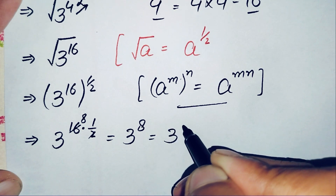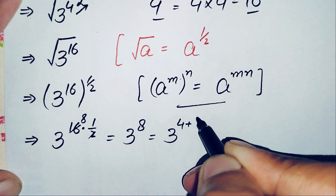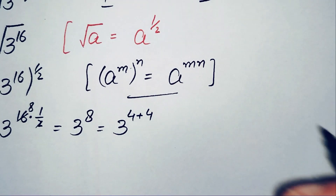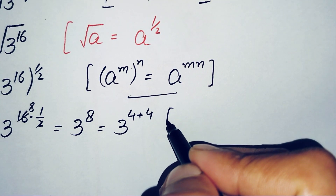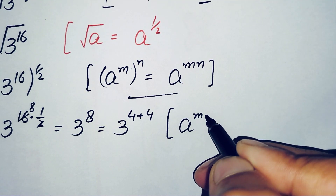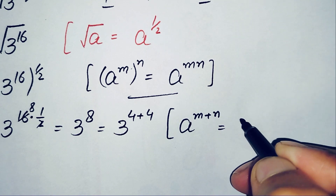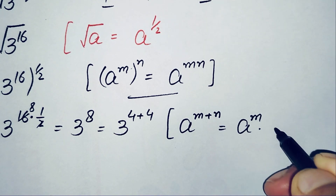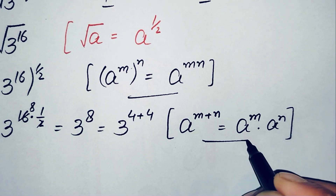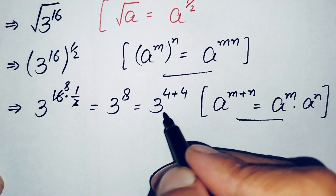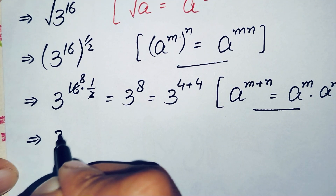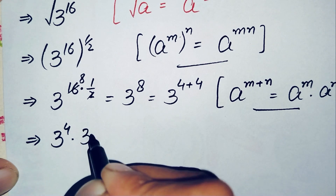We can write 3 raised to power 8 by expressing the exponent 8 as 4 plus 4. Inside this number we use another exponential math property: a raised to power m plus n can also be written as a raised to power m times a raised to power n. Using this property, 3 raised to power 4 plus 4 becomes 3 raised to power 4 times 3 raised to power 4.